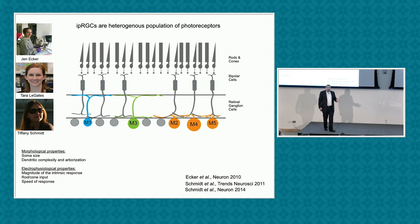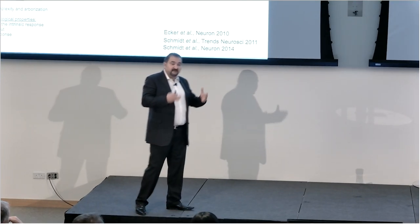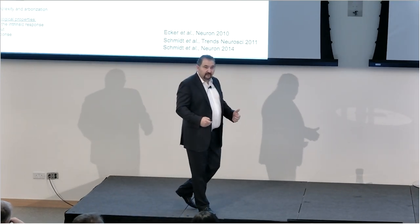Even more interesting, when we first worked on IPRGCs, they all belong to this population. Although this is an on ganglion cell, they arborize in the off sublamina of the retina. This is really because of the work of these three amazing women in the lab. Now we know that IPRGCs are very diverse, and they can be easily differentiated based on very specific characteristics, both morphologically and electrophysiologically.